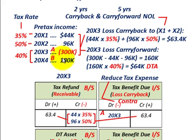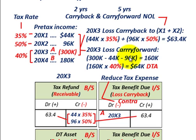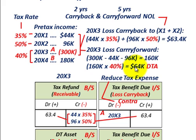We still have a remaining loss that we can carry forward. You take your $300,000 net operating loss and subtract out what we already deducted for the carry back — $44,000 and $96,000 — so we have a loss carry forward of $160,000. We take that times the 40% future tax rate, so $160,000 times 40% gives us $64,000 of a deferred tax asset that we're going to set up for this loss carry forward.